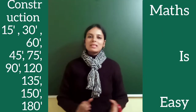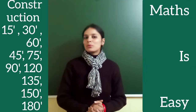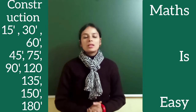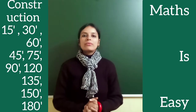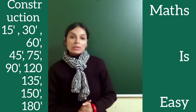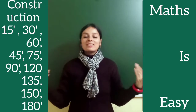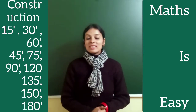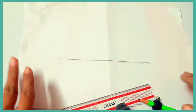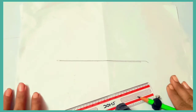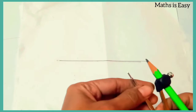Hi everyone, welcome to Maths is Easy. Today we are going to discuss construction of angles: 90 degrees, 45 degrees, 22 and a half degrees, and their bisectors. Let's get started.